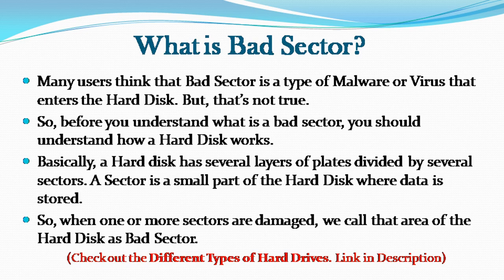Basically, a hard disk has several layers of plates divided by several sectors. A sector is a small part of the hard disk where data is stored. So when one or more sectors are damaged, we call that area of the hard disk a bad sector.